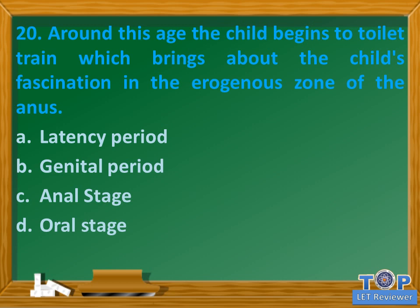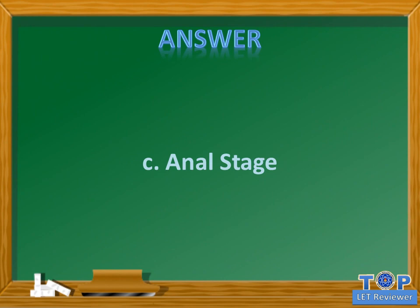Question number twenty: around this age the child begins to toilet train, which brings about the child's fascination in the erogenous zone of the anus. A) latency period, B) genital period, C) anal stage, D) oral stage. Answer: C) anal stage.